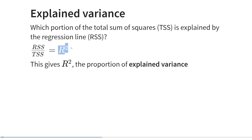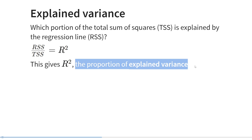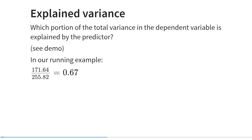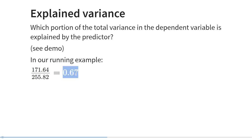This gives us a statistic called r-squared, also called the proportion of explained variance or the coefficient of determination. It ranges between zero — meaning none of the total sum of squares is explained by the regression line — and one, meaning 100% is explained. In our running example, we obtained a regression sum of squares of 171.64 and a total sum of squares of 255.82. Dividing one by the other gives an r-squared of 0.67, which we interpret as: 67% of the variance in grade is explained by hours studied.